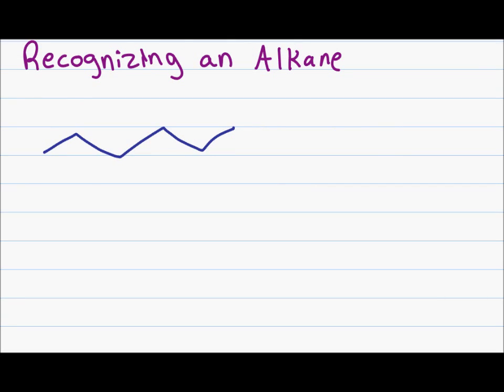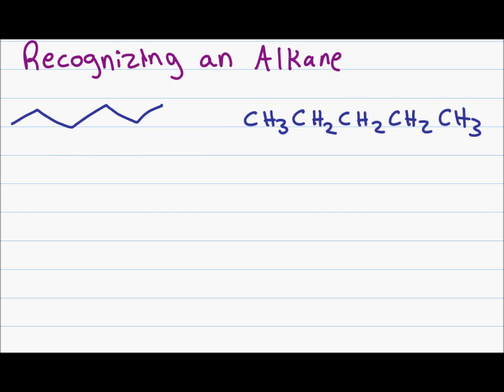Given a line structure representation of a molecule, I recognize the alkane by its single or sigma bonds. What if I'm given a molecule in its condensed structure? How do I recognize an alkane as opposed to an alkene or alkyne? There is a simple formula and we'll use this example to explain how the formula works.